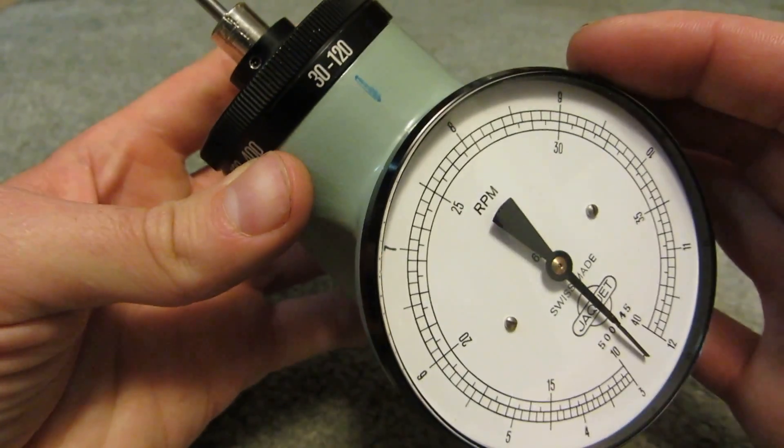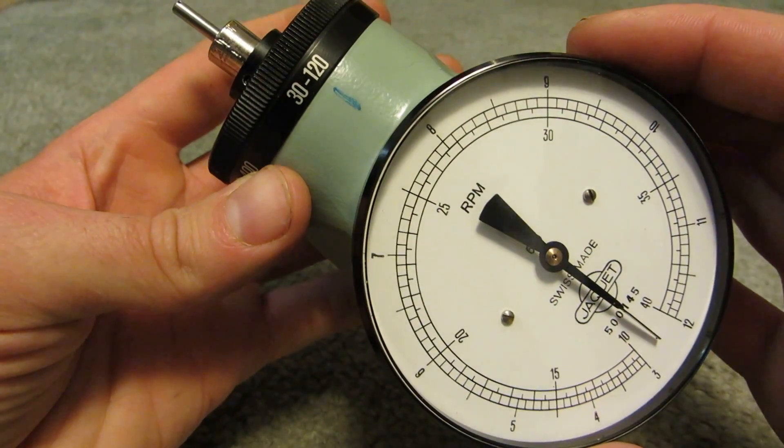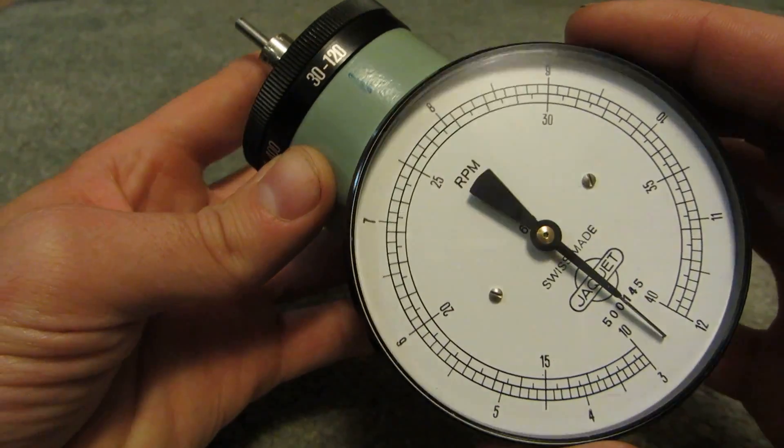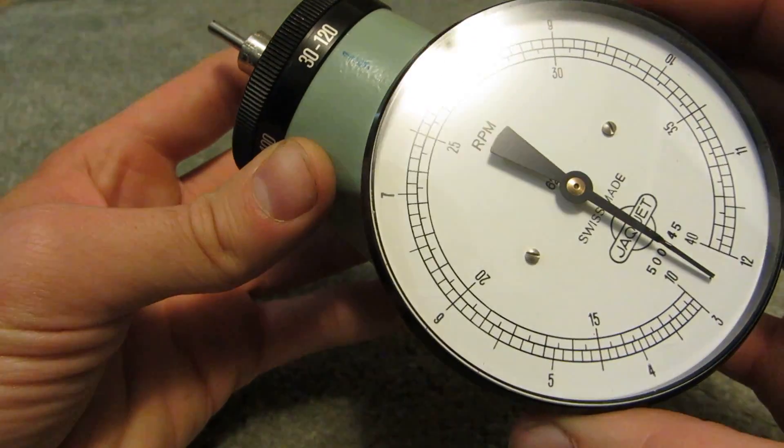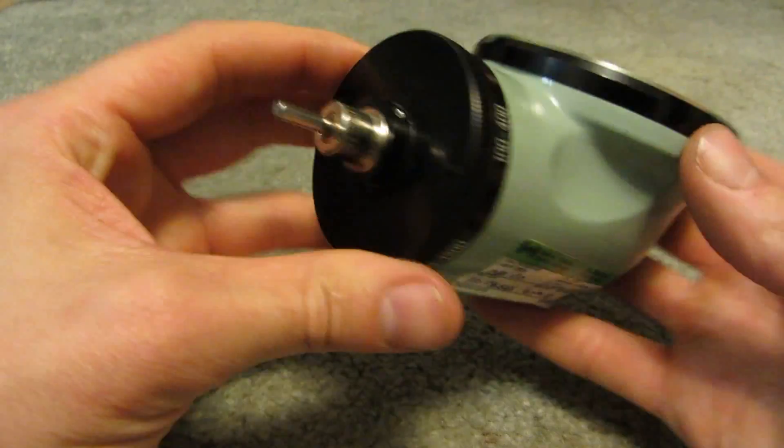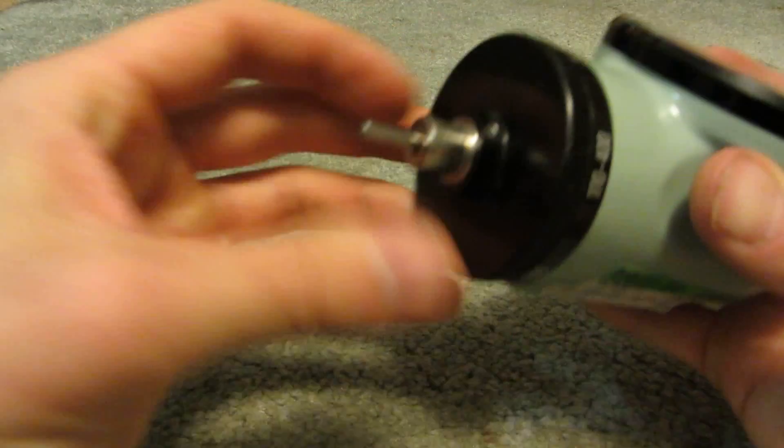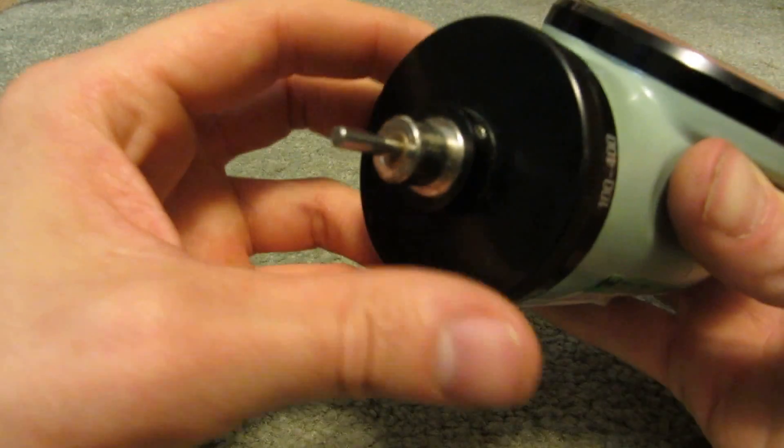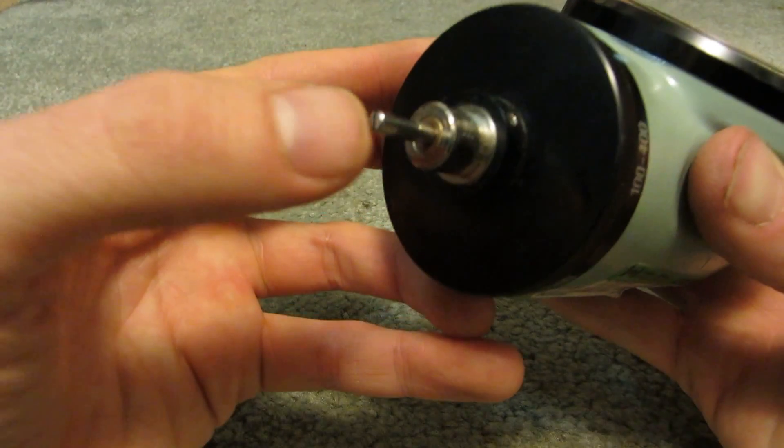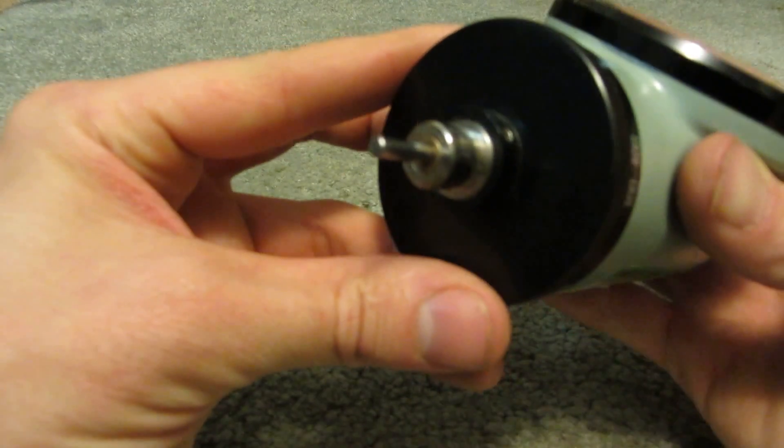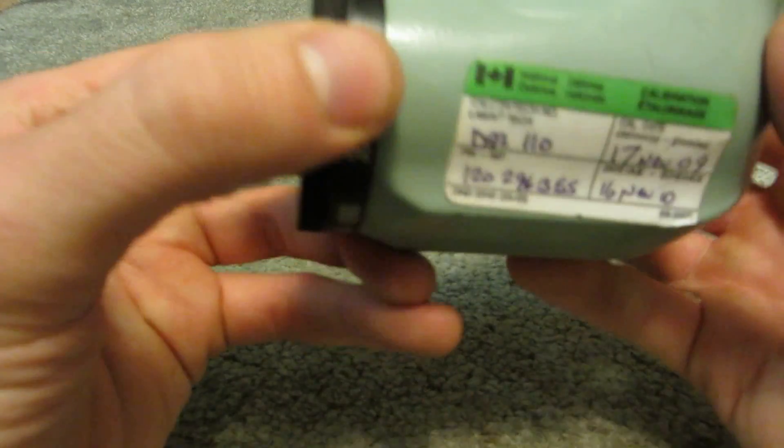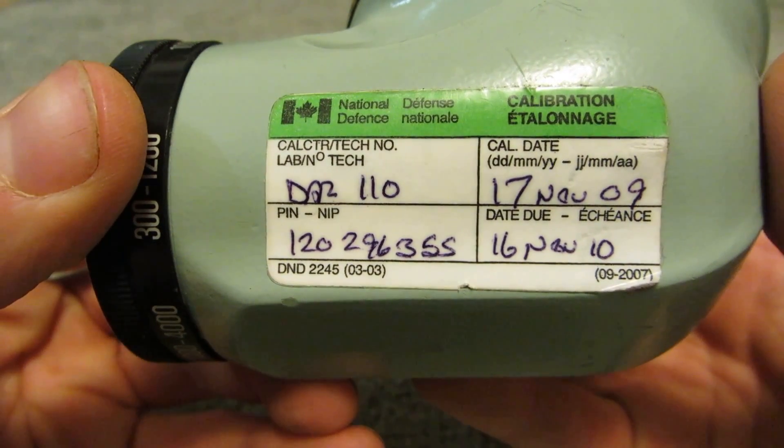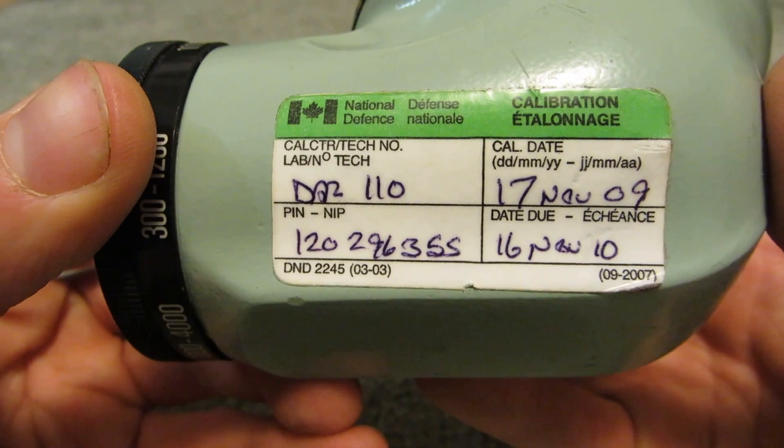I've only seen one other contact RPM meter and it was nothing like this. This is very well made. I don't have the rubber piece for it that is on the end that actually touches whatever you're rotating to give you a reading. It was calibrated November 17th, 2009.